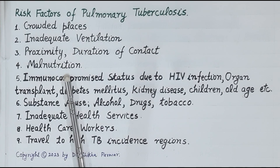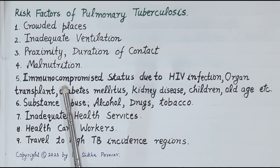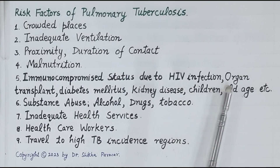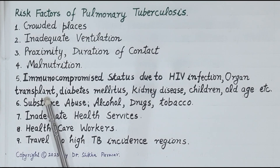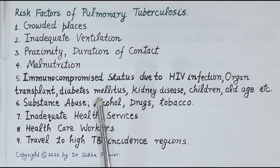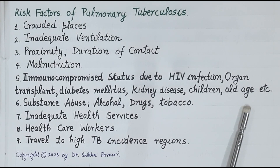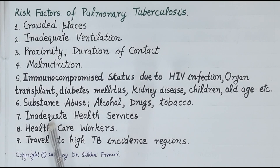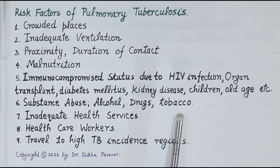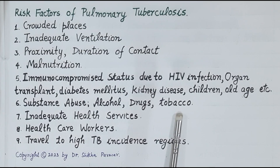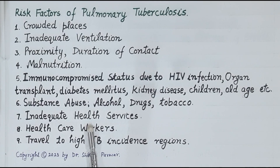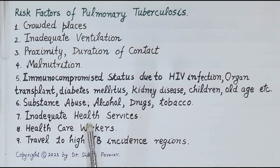Most individuals who become infected with Mycobacterium tuberculosis never develop clinical disease because of good immunity. However, immunocompromised individuals — such as HIV-infected individuals, organ transplant patients who take immunosuppressant drugs, patients with diabetes mellitus, severe kidney disease, children, and the elderly — are at higher risk. Substance abuse — alcohol, drugs, tobacco and cigarette smoking — causes malnutrition, impairs immunity and increases the risk of tuberculosis. Inadequate healthcare services due to poverty or non-availability also prevent cure at an early stage.